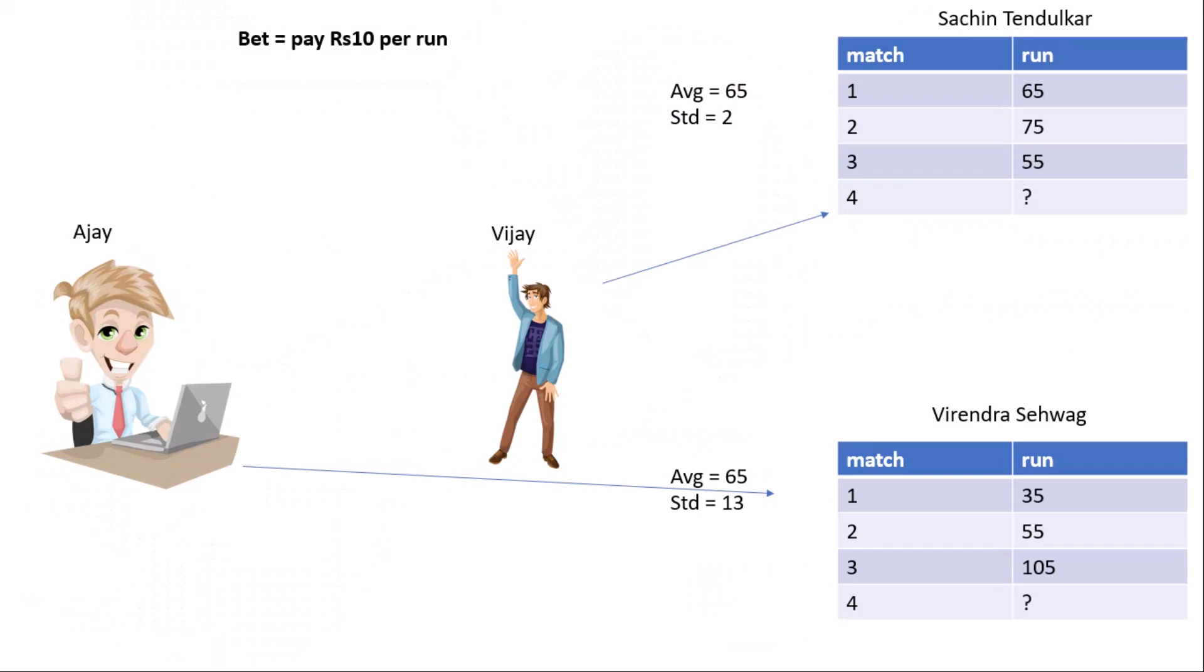Ajay doesn't know statistics, and Vijay knows statistics. So Vijay and Ajay analyze the data. Vijay knows statistics, that's why he knows what is the meaning. As you can see, the average is same, 65 and 65, but the only difference is standard deviation.